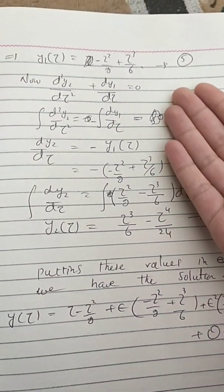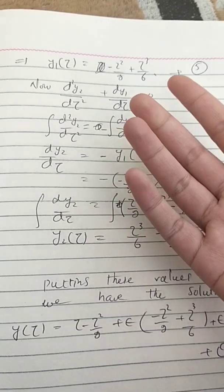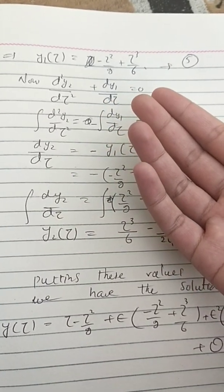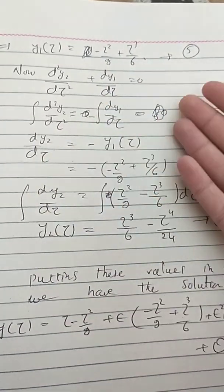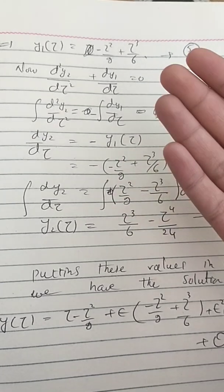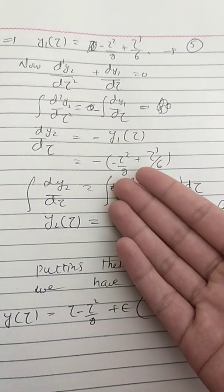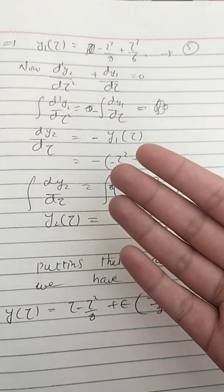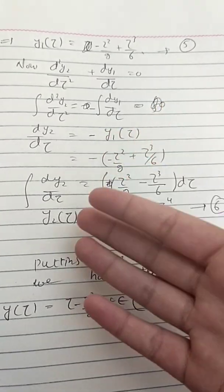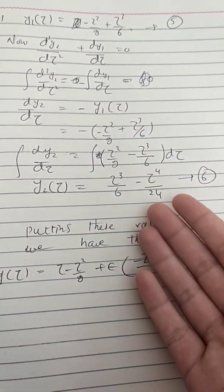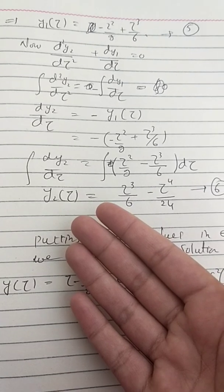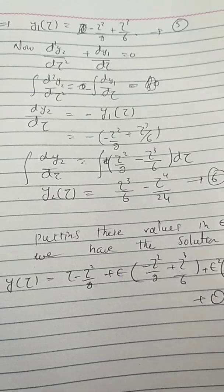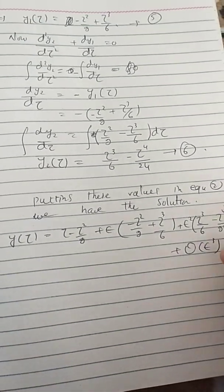The third equation is d²y₂/dτ² + dy₁/dτ = 0. Integrating both sides gives us τ²/2 - τ³/6. Integrating again we get equation 6: y₂ = τ³/6 - τ⁴/24.